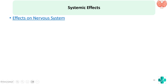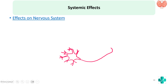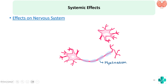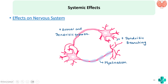Moving on to the effect on the nervous system. Whenever there is thyroid deficiency, especially during pregnancy, the baby would be born a cretin — meaning there will be mental retardation. This is because thyroid hormone helps increase the myelination of neurons so that conduction is faster. It also increases axonal and dendritic growth and improves dendritic branching, leading to more synapse formation, more neurotransmitters, and overall increased nerve conduction.